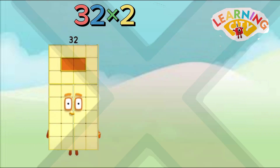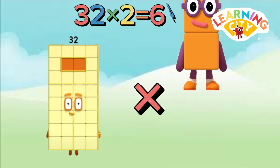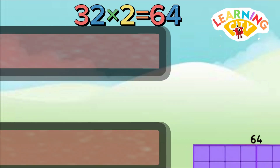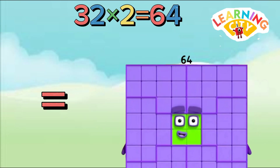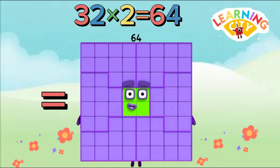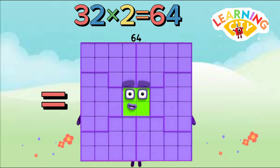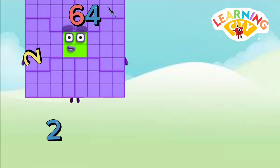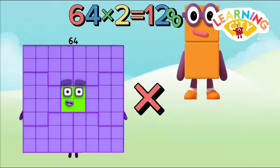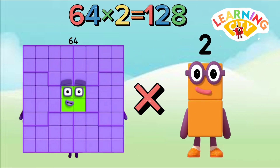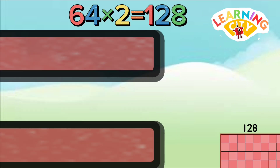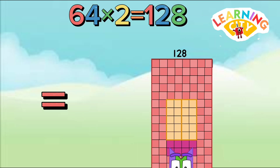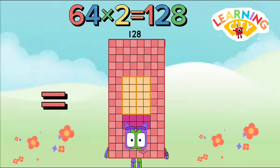Eight times two equals sixteen, sixteen times two equals thirty-two, thirty-two times two equals sixty-four.